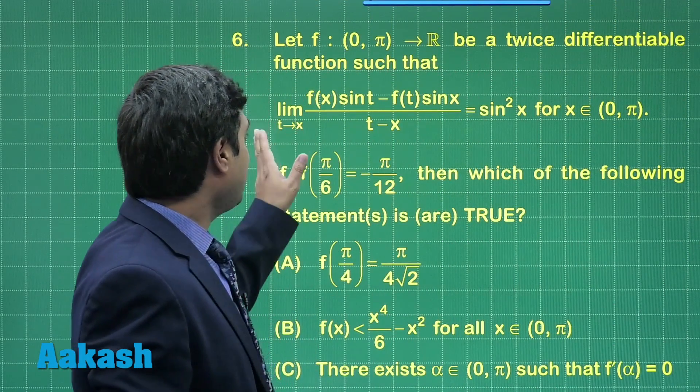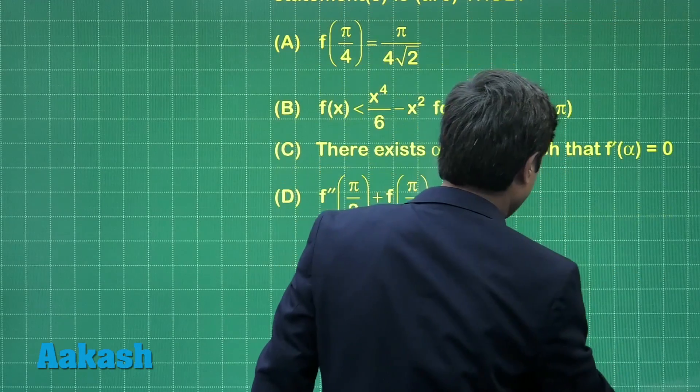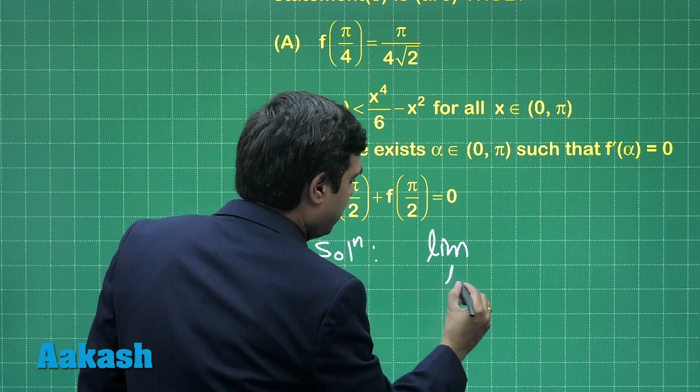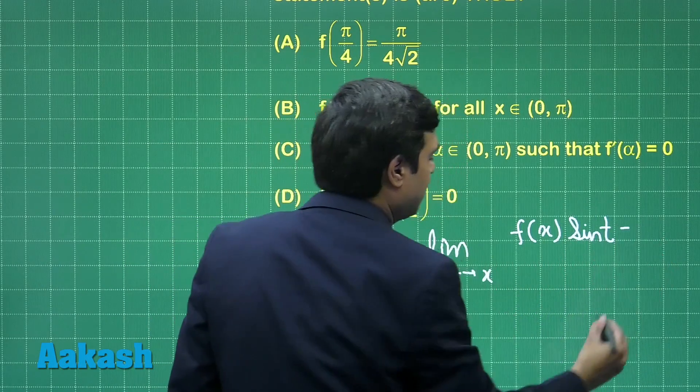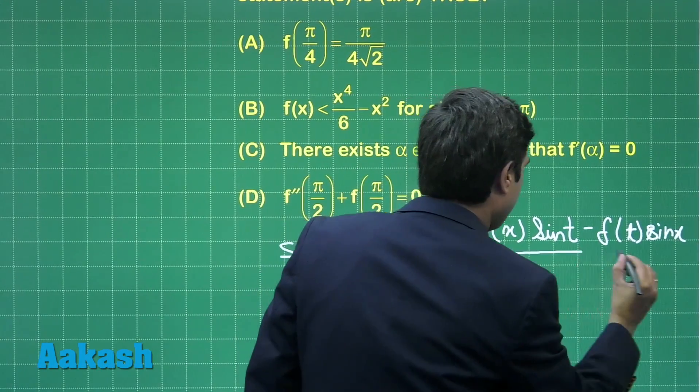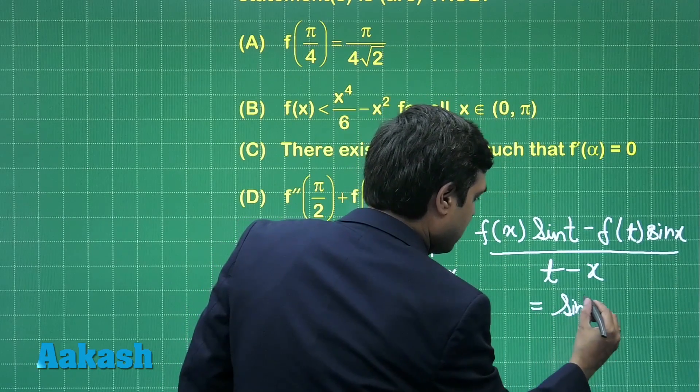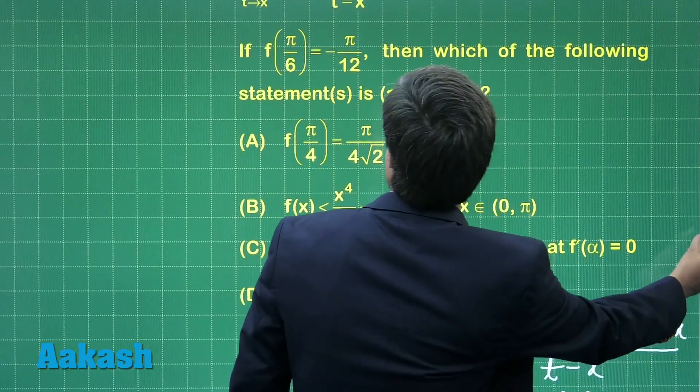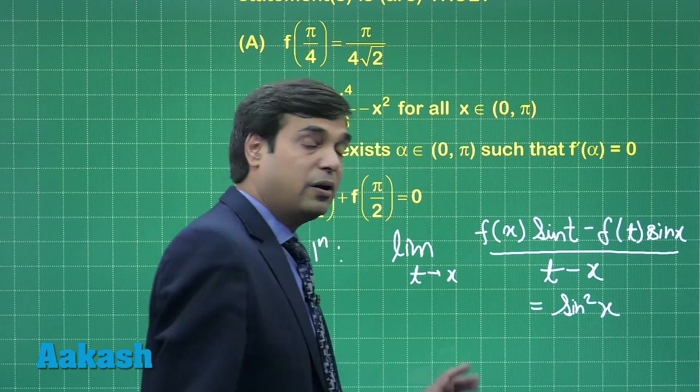The given condition is: limit as t approaches x of [f(x)sin t - f(t)sin x] / (t - x) = sin²x. Let us recheck this equation. This says f(x)sin t - f(t)sin x upon t - x, right.